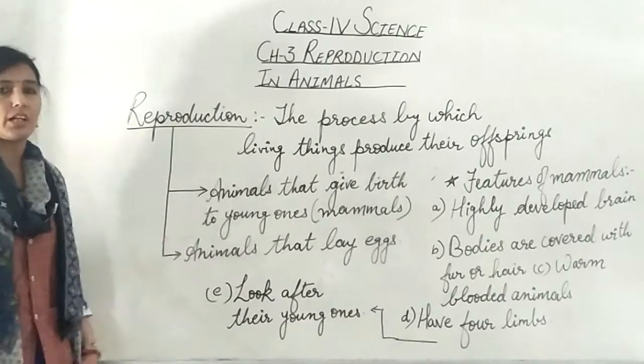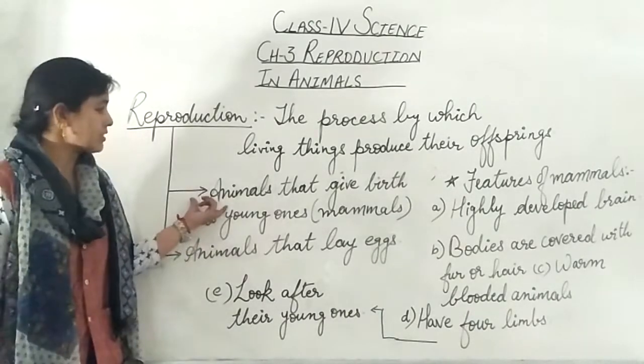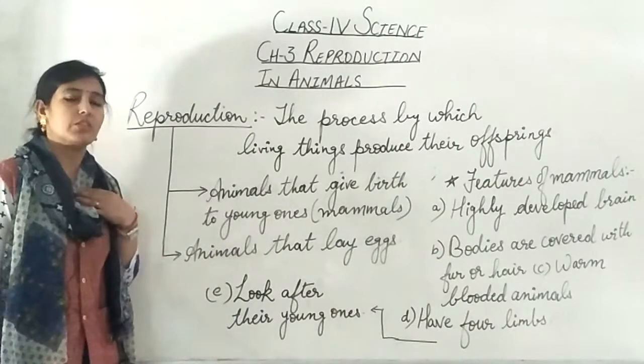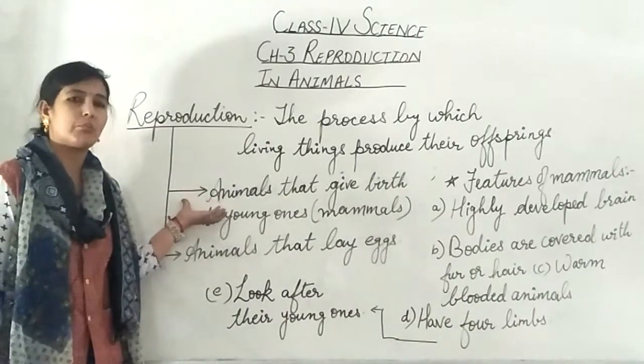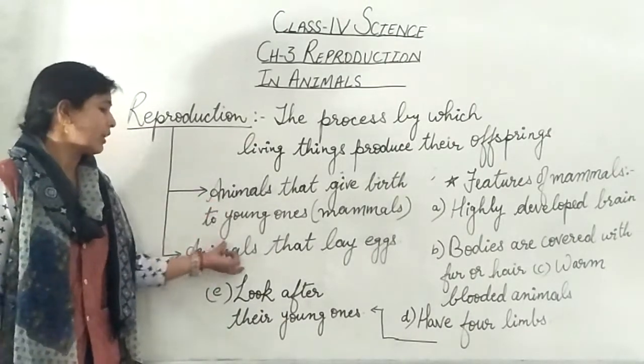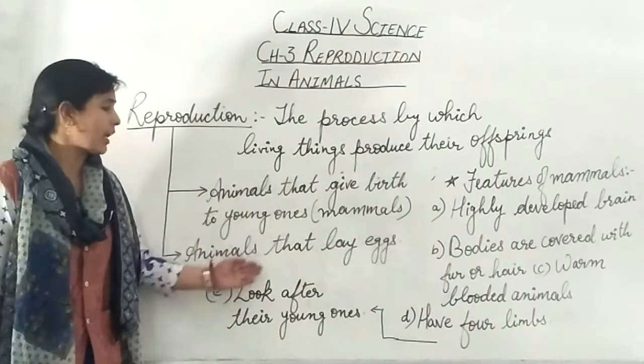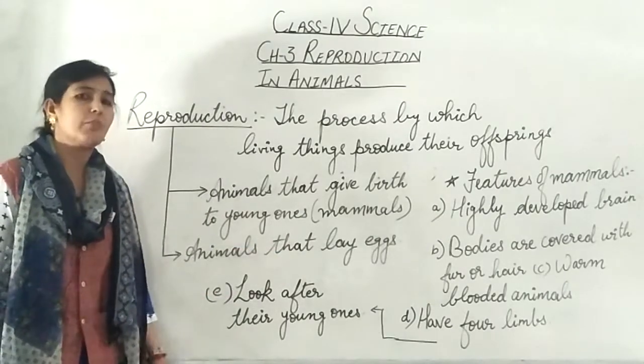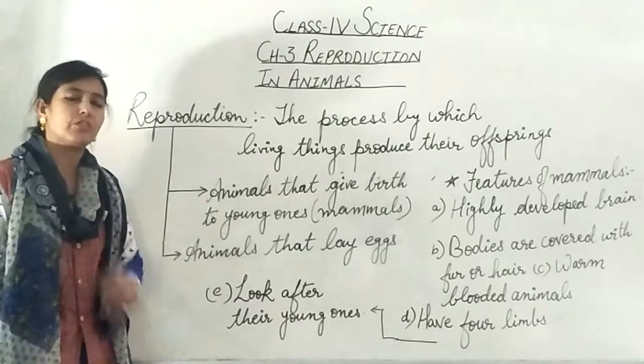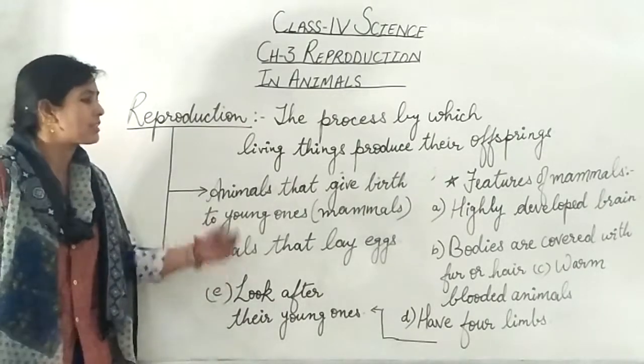Now reproduction has been categorized into two parts. First, animals that give birth to young ones. Next is the category of animals that lay eggs, which can be categorized into different parts: birds, reptiles, etc.